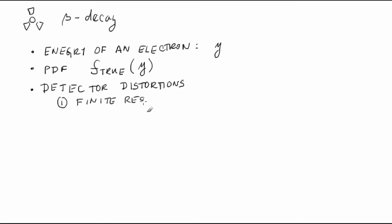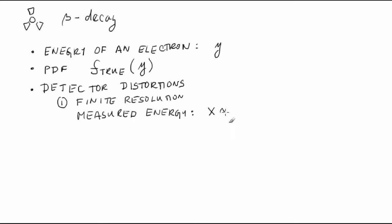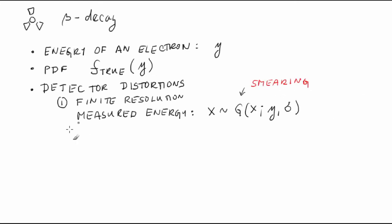We will further assume that our detector distorts this true distribution in two ways. First of all, the detector has a finite resolution and, therefore, the observed energy value in an event, given the true value, is a random variable. In the simplest case, its distribution might be a Gaussian PDF with mean equal to the true value Y and with some non-zero variance. The observed value X is distributed according to a Gaussian distribution of X with mu equal to Y and with some variance sigma. Unfortunately, much more complicated PDFs might be needed to describe the resolution. Anyway, the particle physics jargon is that the true energy is smeared with some resolution function.